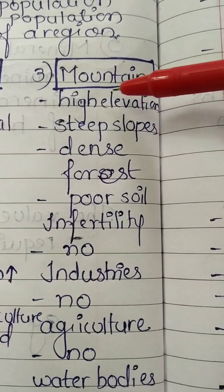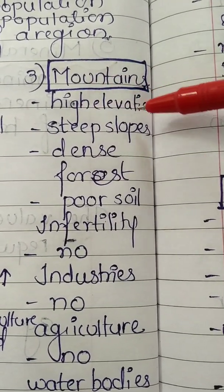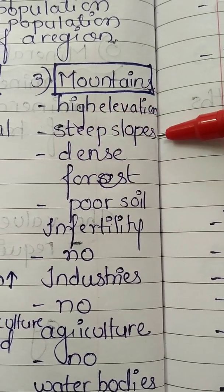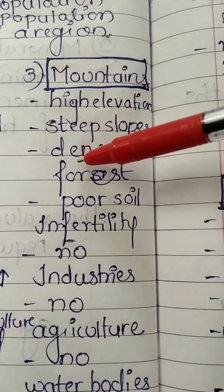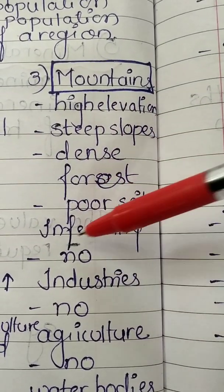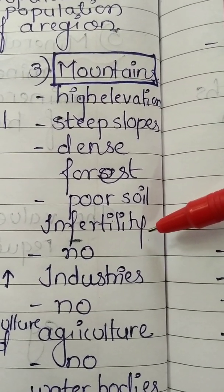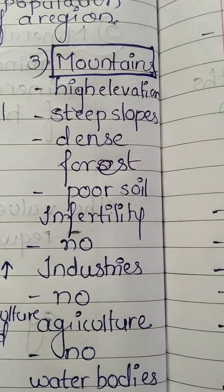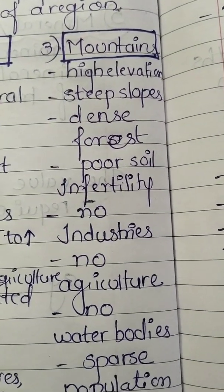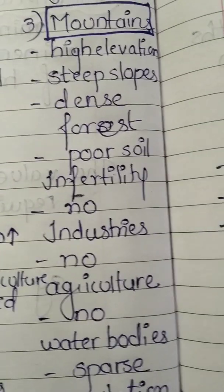Mountains are high elevated areas with steep slopes, dense forest, and poor soil fertility. Because soil fertility on mountains is very less, agriculture is not carried out there.